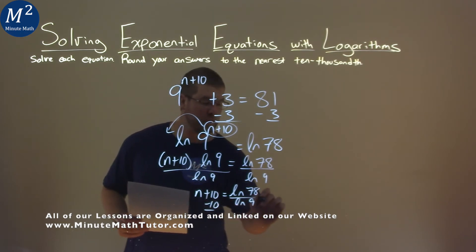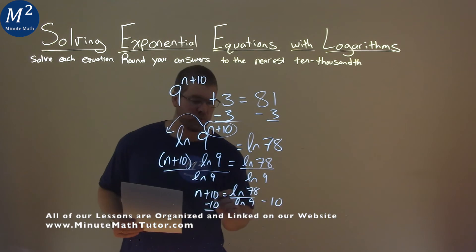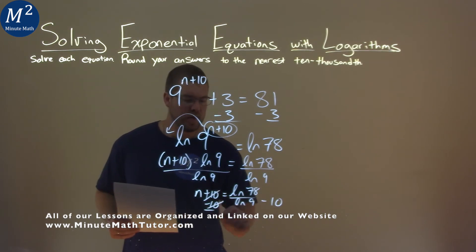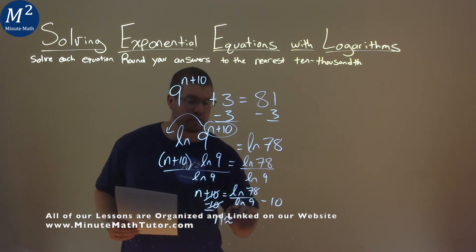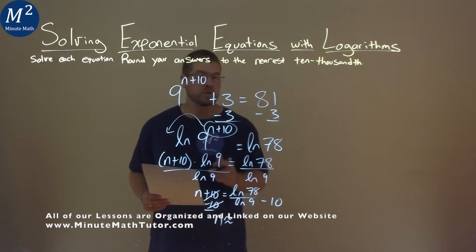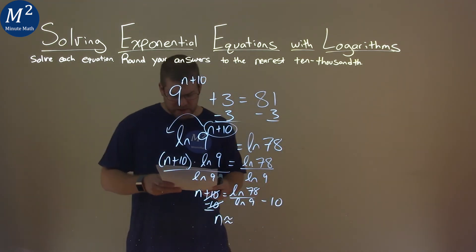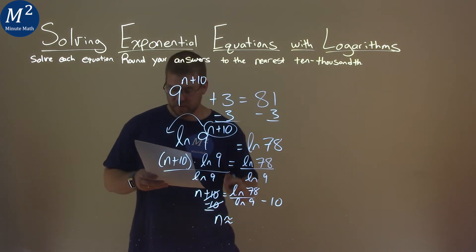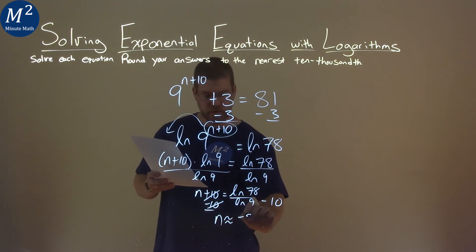If we subtract 10 from both sides here, this cancels, and n now is going to be approximately - we'll use our calculator - but natural log of 78 over natural log of 9 minus 10 comes out to be negative 8.0172.